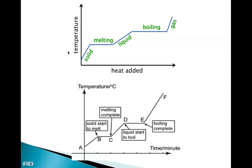Here's another part of the graph to be aware of. We went from a solid, melting it to a liquid, and then boiling it to a gas. Point B is where we start to melt; melting is complete by C. D is where the liquid starts to boil; E is where boiling is completed and we change into a straight gas.